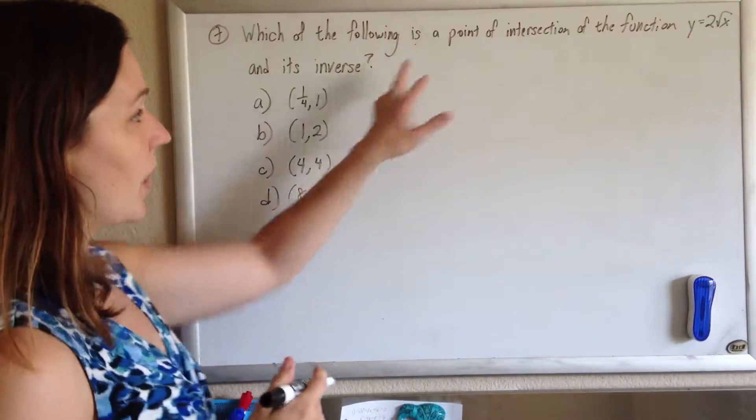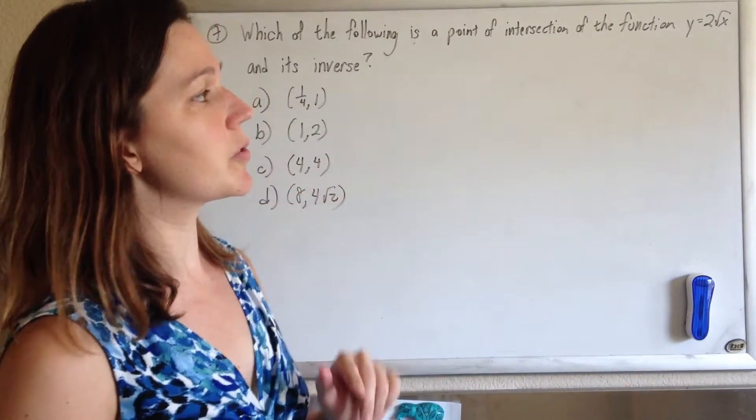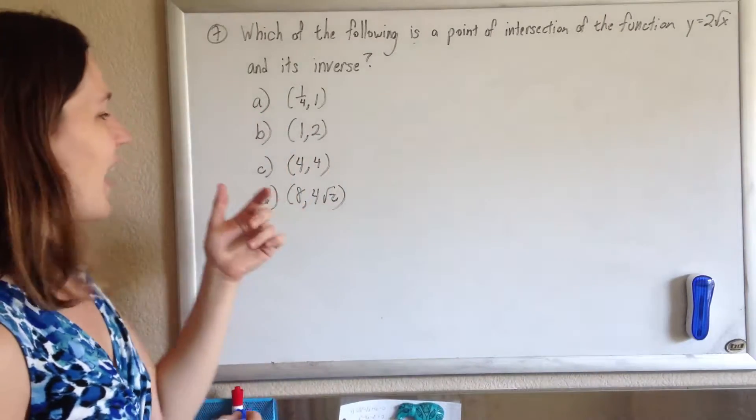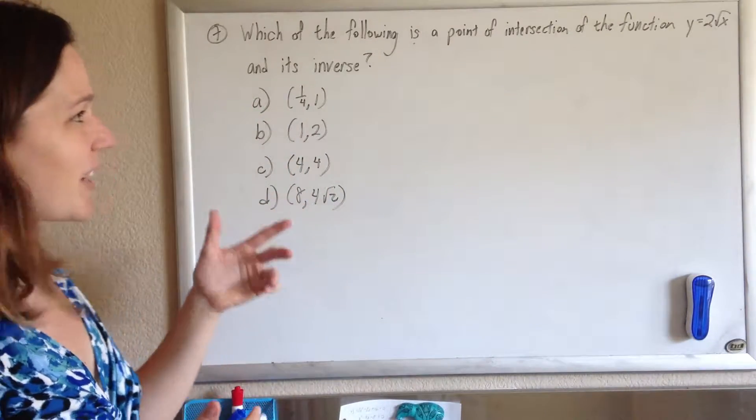Okay, so they want to know the point of intersection of y equals 2 root x and its inverse. And with multiple choice, you can do this really fast,